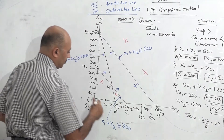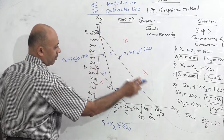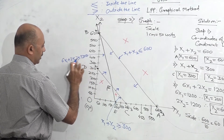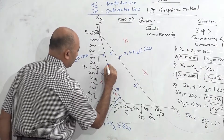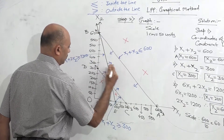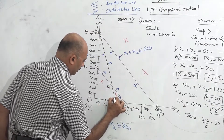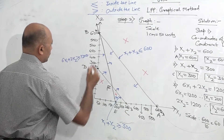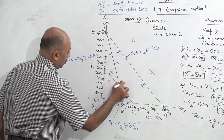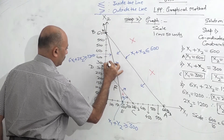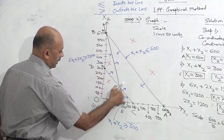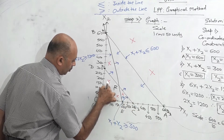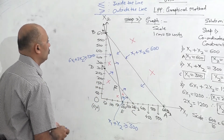The last line is EB, the third constraint: 6x1 plus 2x2 greater than or equal to 1200. Again it is greater than, so the region has to be outside. Starting from B to F, the region is outside, so that triangle cancels. From F to E, the region is also outside, so that part is already cancelled. Whatever remains is our solution.